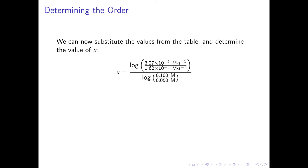We are now ready to calculate x, the order with respect to peroxydisulfate ion. x = log(3.27×10^-5 / 1.62×10^-5) divided by log(0.100 / 0.050), which gives log(2.02) / log(2.00) = 0.305 / 0.301 = 1.01, approximately equal to 1. Therefore, the reaction is first order with respect to peroxydisulfate ion.